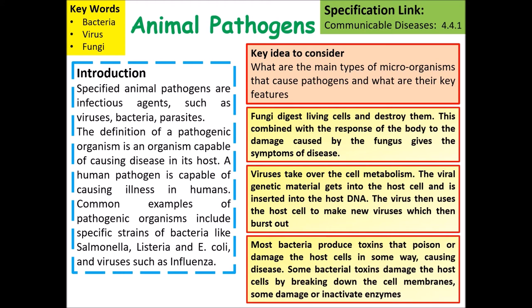Most bacteria produce toxins and poisons that damage host cells. Some toxins damage host cells by breaking them down or damaging cell membranes, and some can cause damage or inactivation to enzymes.